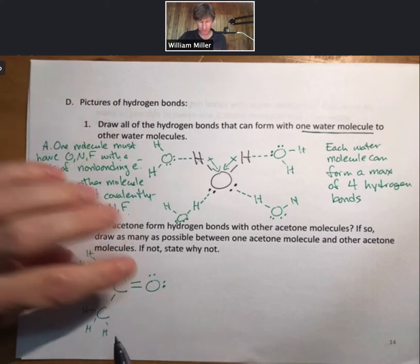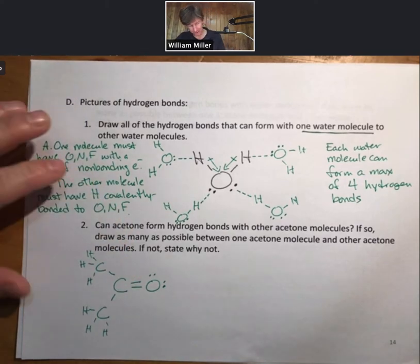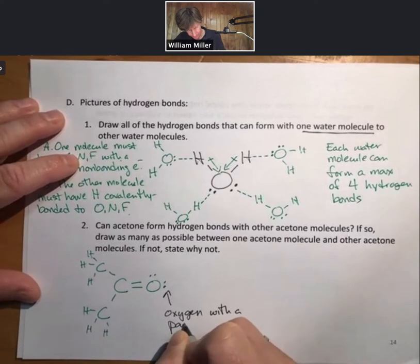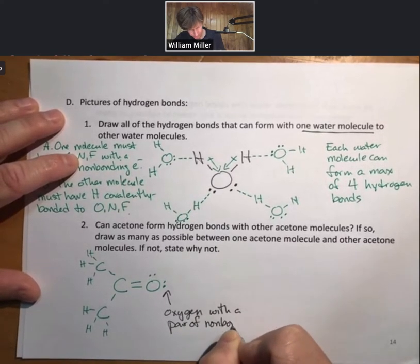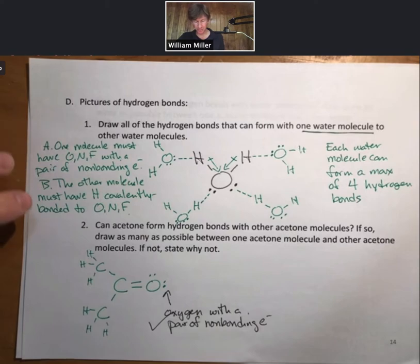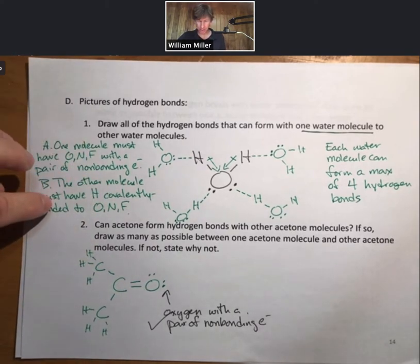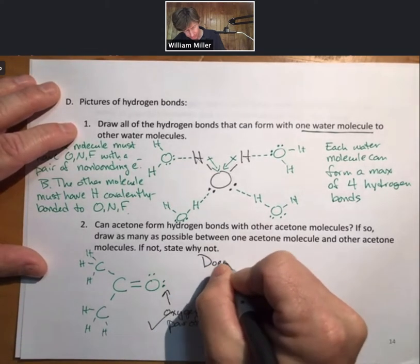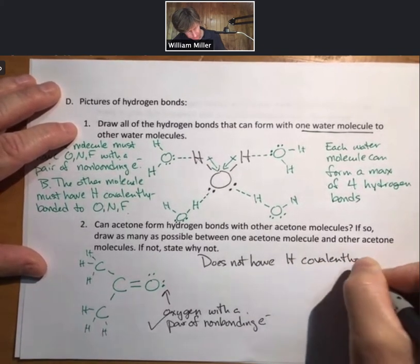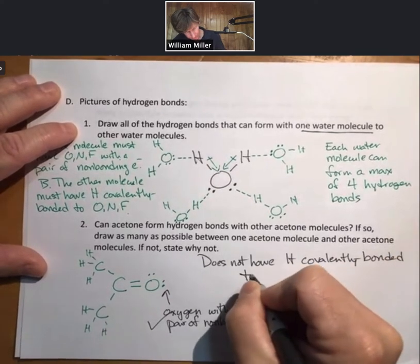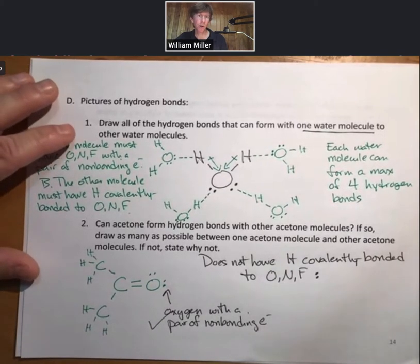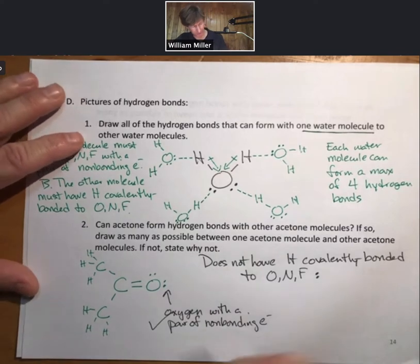So even though acetone has oxygen, nitrogen, fluorine—it has oxygen with a pair of non-bonding electrons, so check—it does not have hydrogen covalently bonded to O, N, or F. And our conclusion is one acetone molecule cannot form hydrogen bonds with another acetone molecule.